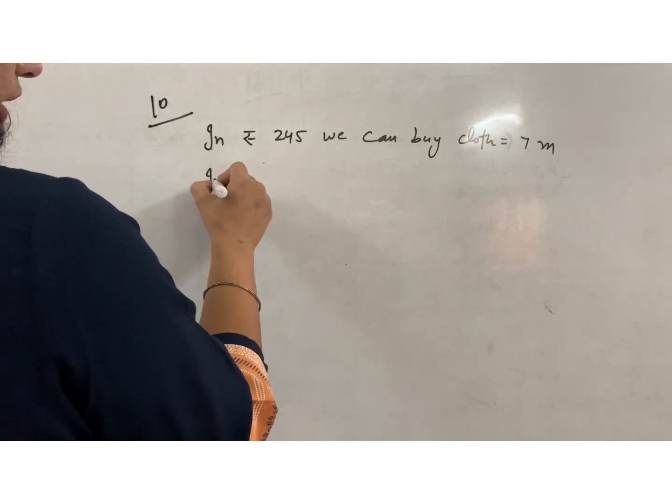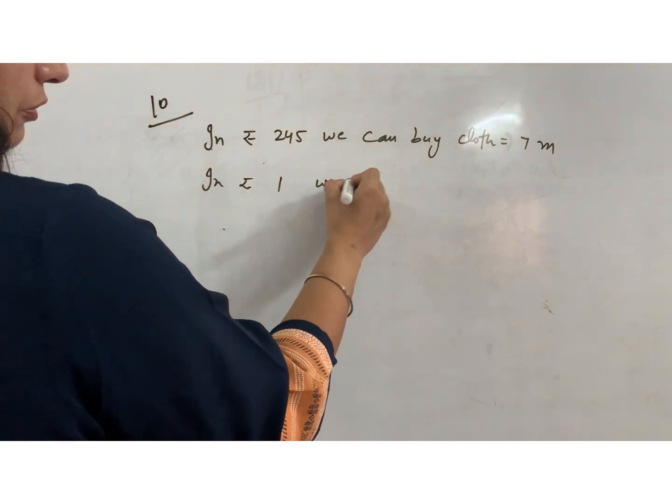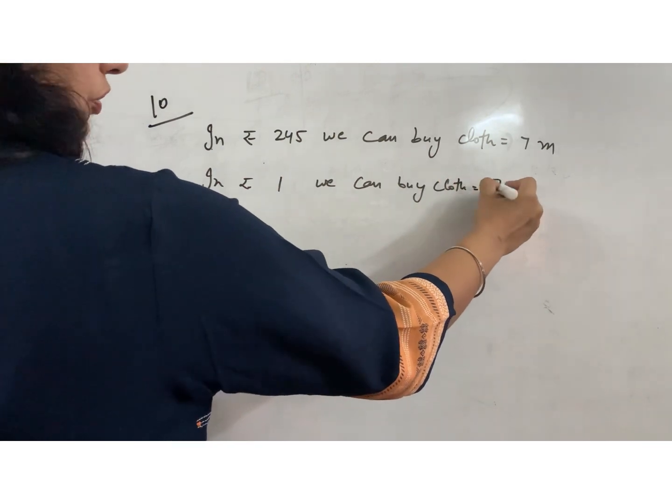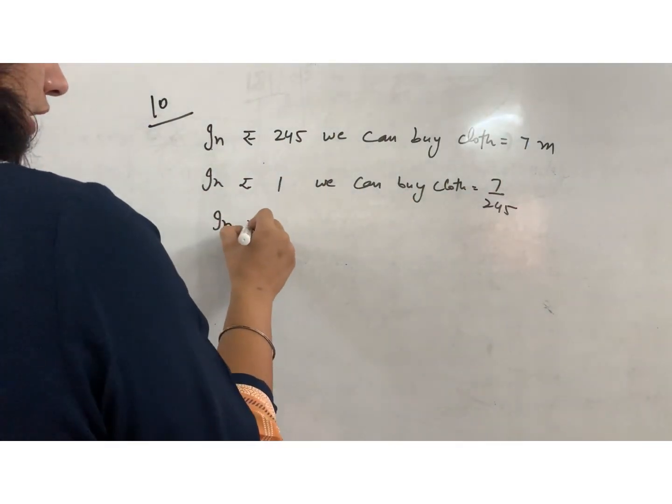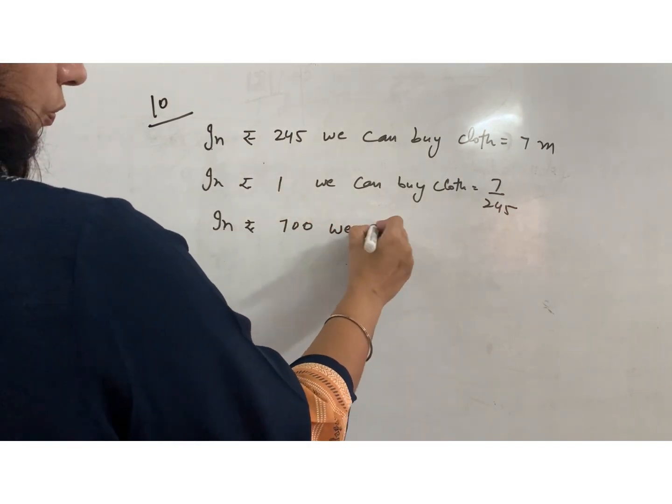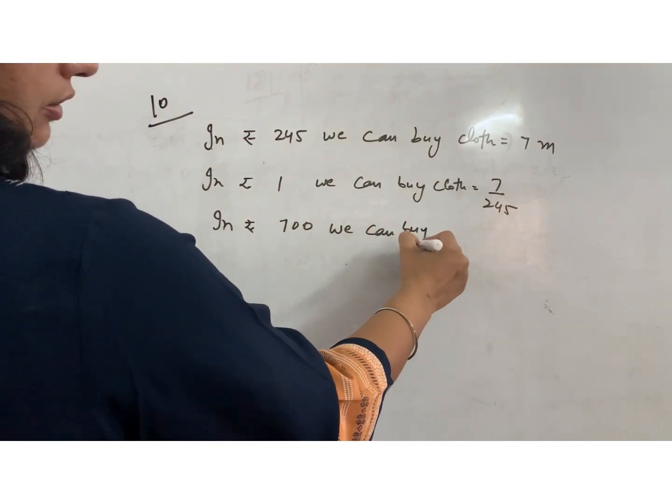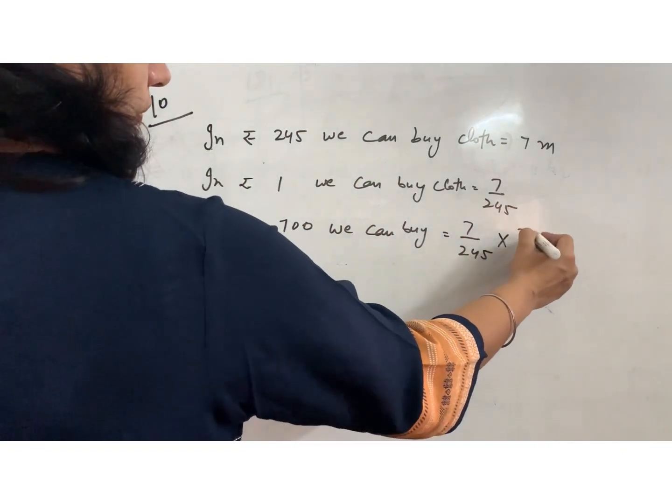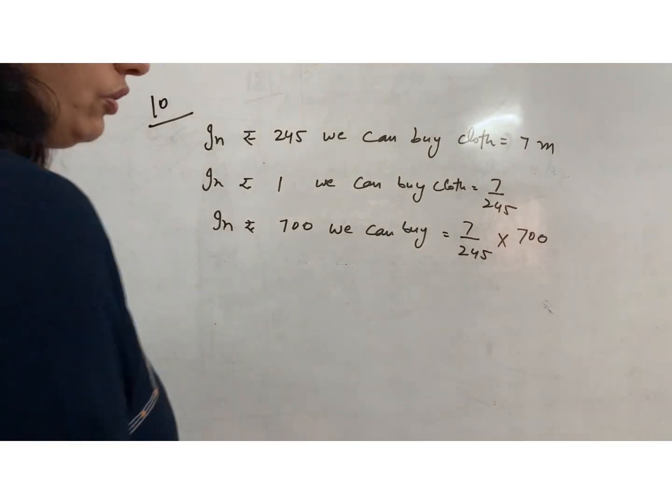In Rs. 1 we can buy cloth 7 upon 245. In Rs. 700 we can buy is equal to 7 upon 245 multiply 700.